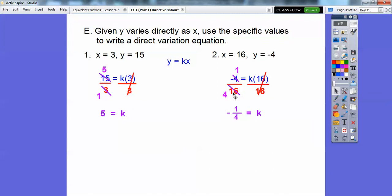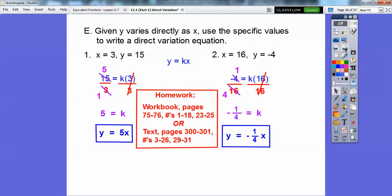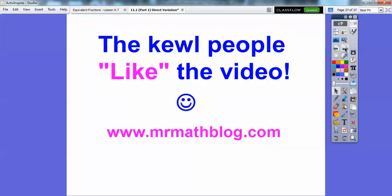Over here, negative 4 over 16 reduces to negative 1 fourth. So now let's make it so y equals kx. So in this one, it's going to be y equals 5x. This one's going to be y equals negative 1 fourth x. Now, if you're in my class, I don't know which one I'm going to assign to you guys. Probably the workbook, but who knows? It depends on the year and stuff. All right, you guys, take care.